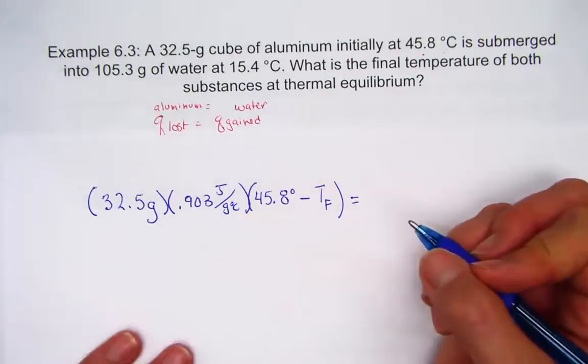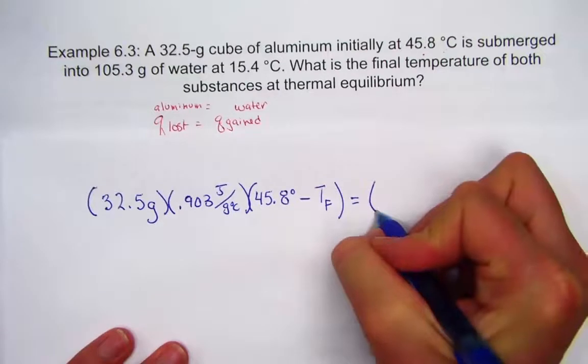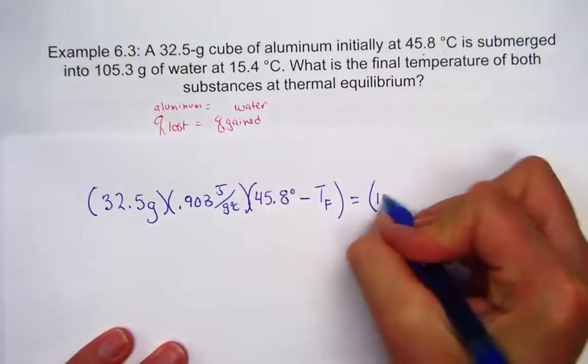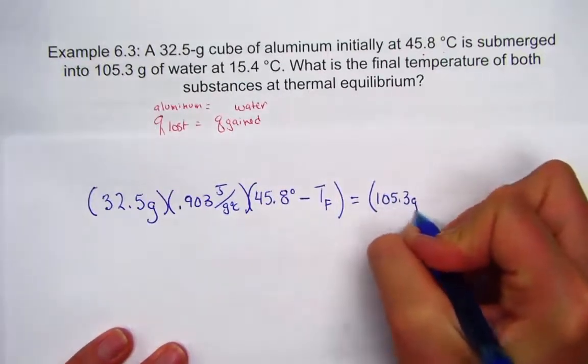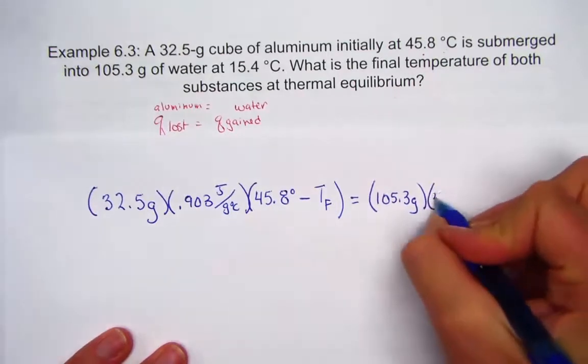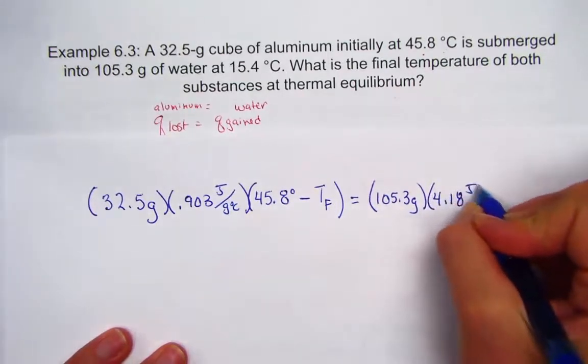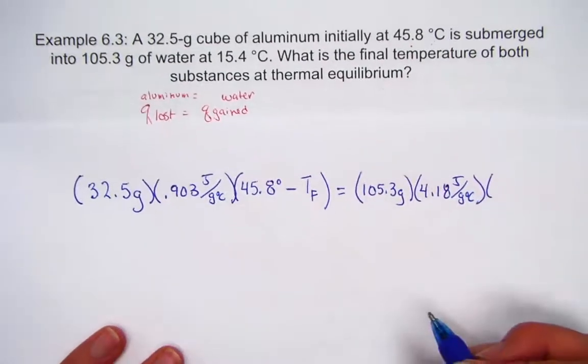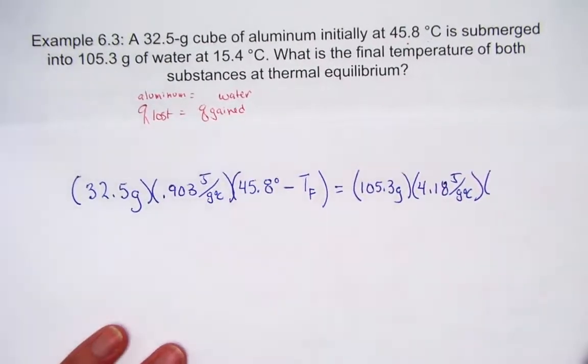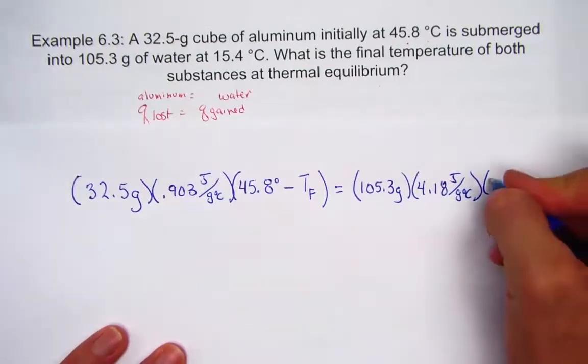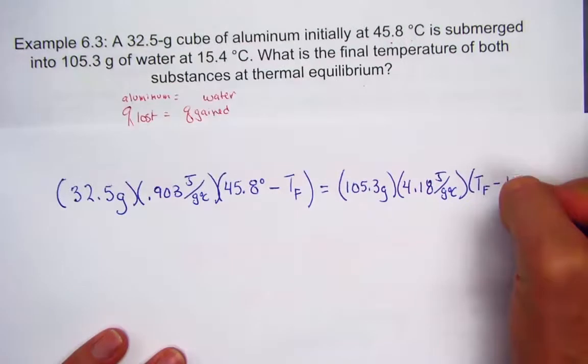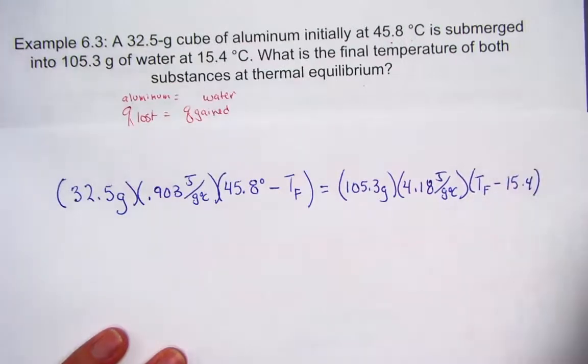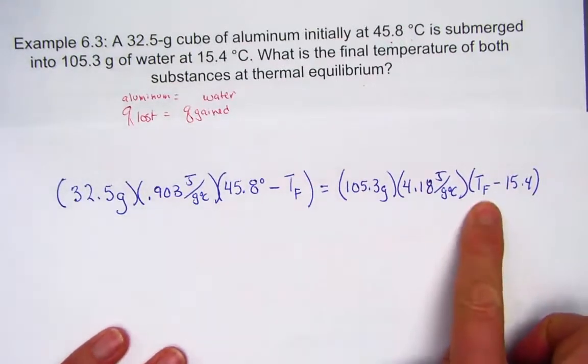...set equal to the MC delta T for water. The mass of the water, 105.3 grams. 4.18 joules per gram degree Celsius is our constant for water. And keeping in mind that the water is going to warm up, so the final temperature is actually a larger number than the 15.4. I'll just show that by placing it first in the equation.